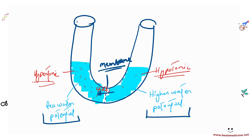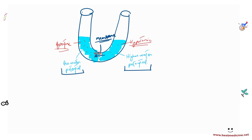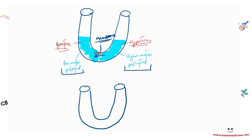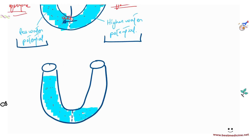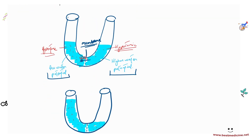So water is allowed to move to the left, and it will keep moving until concentrations on both sides are equal. A short while later, water on the left has increased while water on the right has decreased. This process continues until concentration is relatively equal on both sides — and that is called osmosis. Osmosis can also be defined as movement of water from a dilute solution to a concentrated solution.